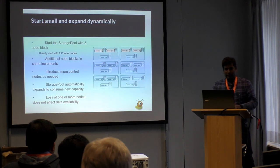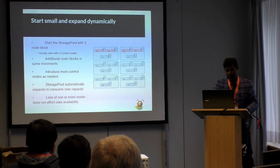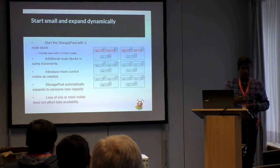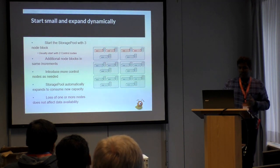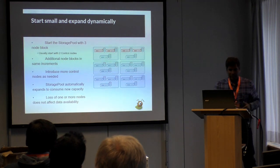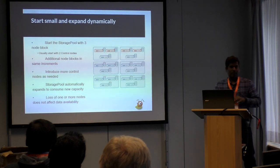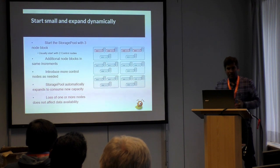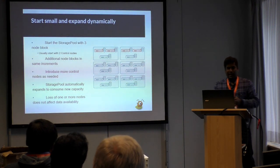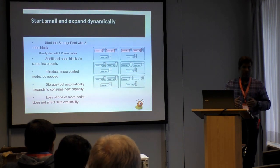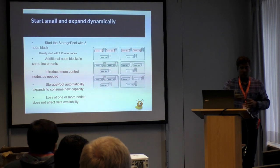This would be a typical customer deployment in which they might start with three nodes. As described earlier, we have a deduplication component. The nodes on which deduplication would be running we call control nodes, and the nodes that just provide the storage we call data nodes. In a typical deployment, the customer might start with three nodes — two would have SSDs used for dedupe, and the other would just provide storage.